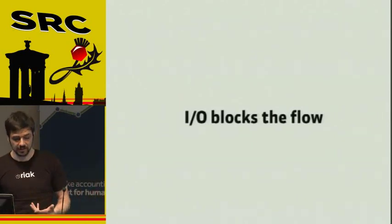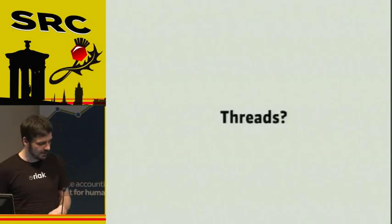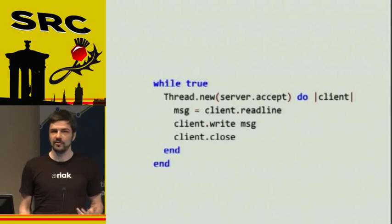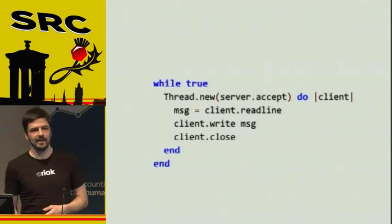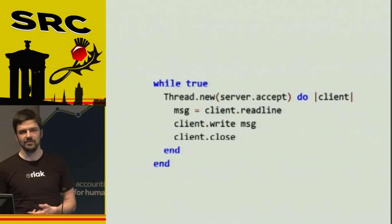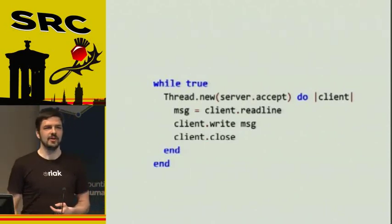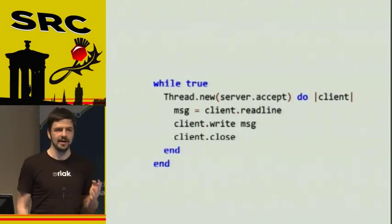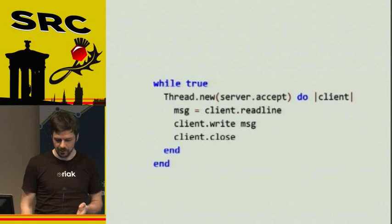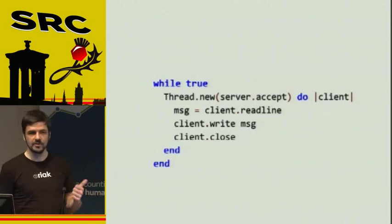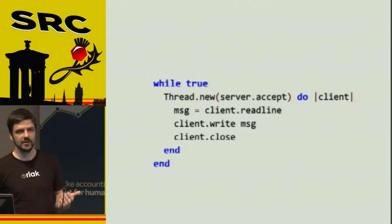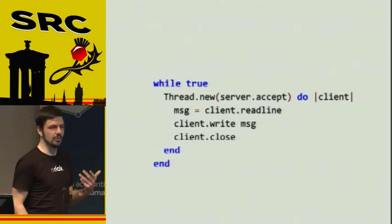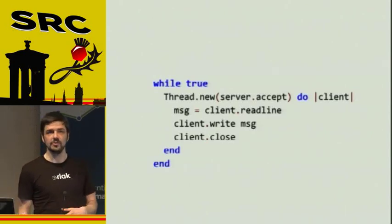I/O usually blocks the flow in a traditional procedural style. You could try using threads for that to solve the problem — basically wrap every connection in a different thread. But the problem starts to accumulate when you have 10,000 clients trying to connect to your server. Thanks to MRI's threading model, you can basically only serve one client at a time still. But at least all the other threads can wait and won't block any other thread that's currently doing something.